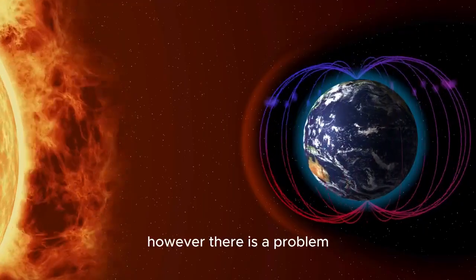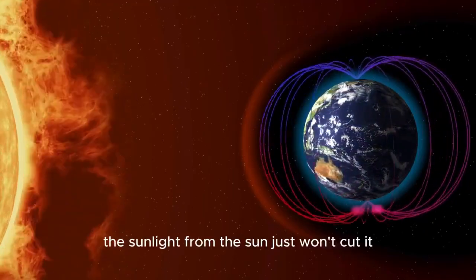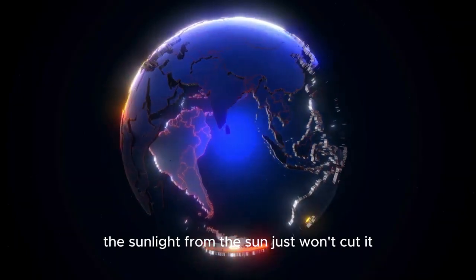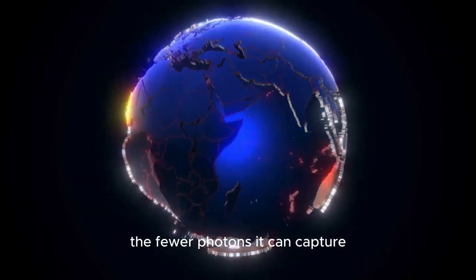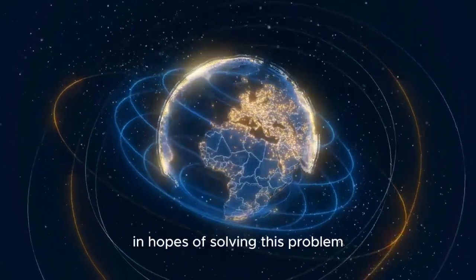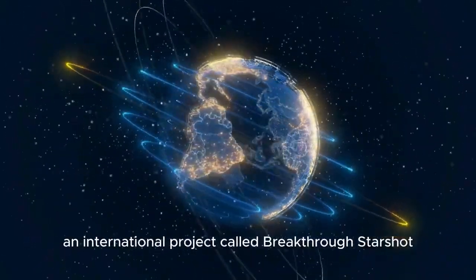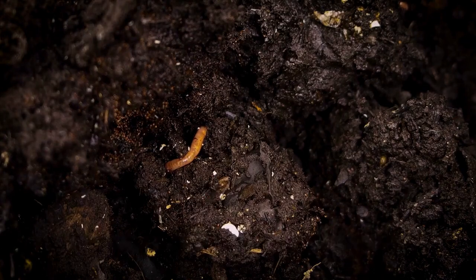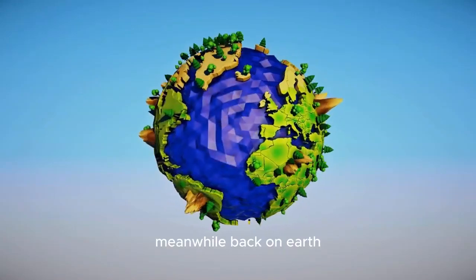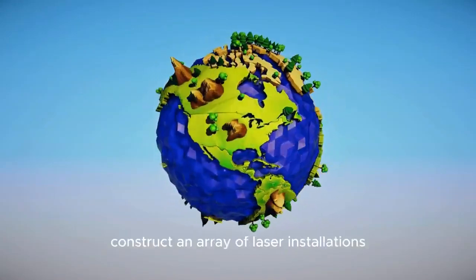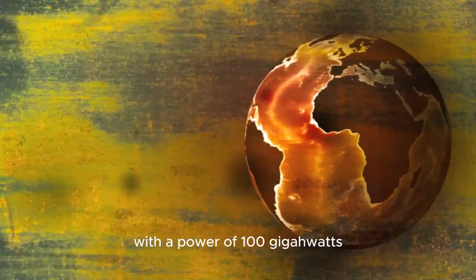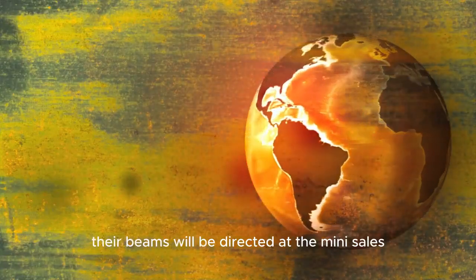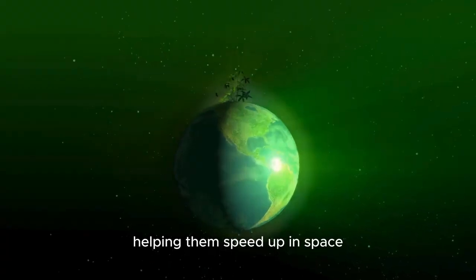However, there is a problem when it comes to interstellar journeys. The sunlight from the sun just won't cut it. The farther the sail is from it, the fewer photons it can capture. In hopes of solving this problem, an international project called Breakthrough Starshot plans to build a thousand small solar sails, each weighing no more than one gram. These mini-sails will require less light to accelerate. Meanwhile, back on Earth, researchers plan to construct an array of laser installations with a power of 100 gigawatts. Their beams will be directed at the mini-sails, helping them speed up in space.